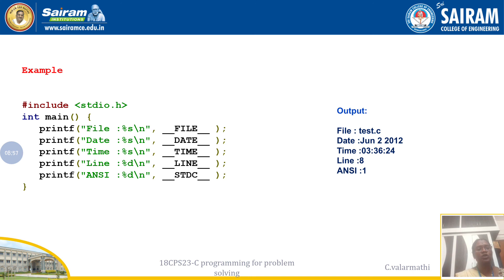The output shows: file is test.c (the current file), date is June 2, 2012 (example date), current time is 3:36:24, the current line is the eighth line, and since we follow ANSI C standard, STDC gives the value 1. These are the predefined macros available in C programming. We have now completed preprocessor directives with all detailed examples, and I will see you in the next video.